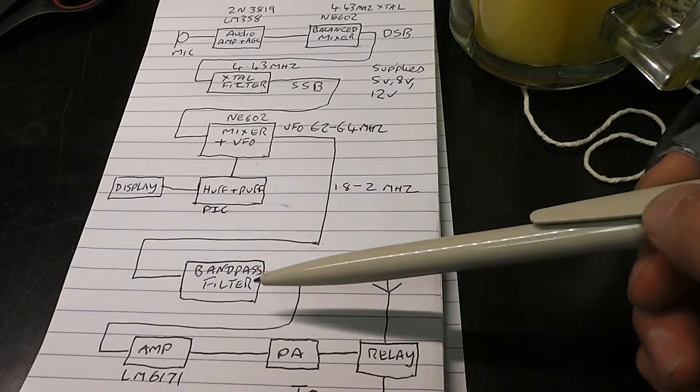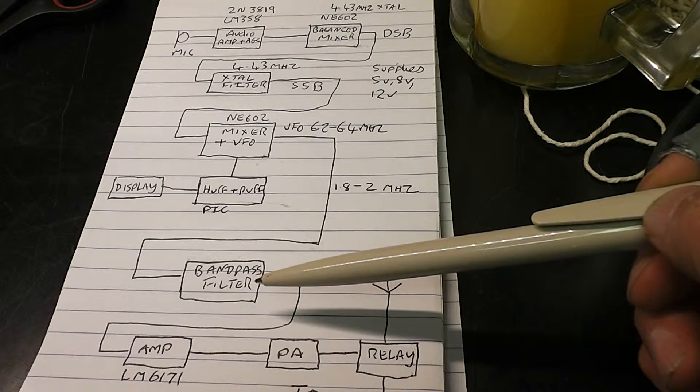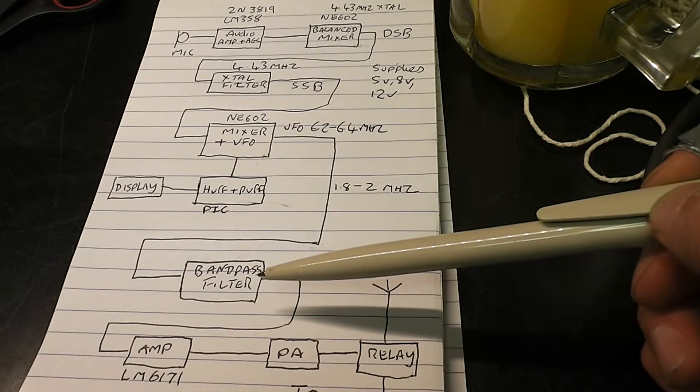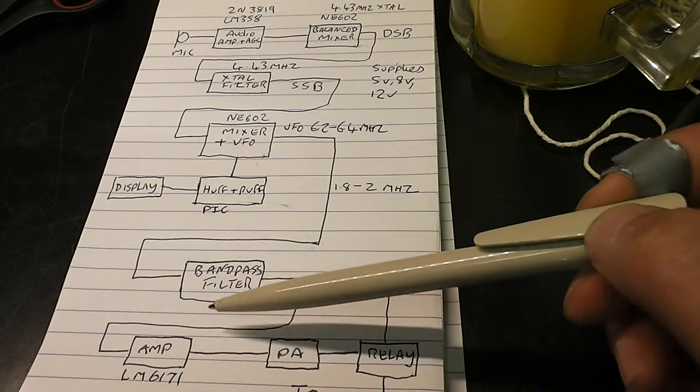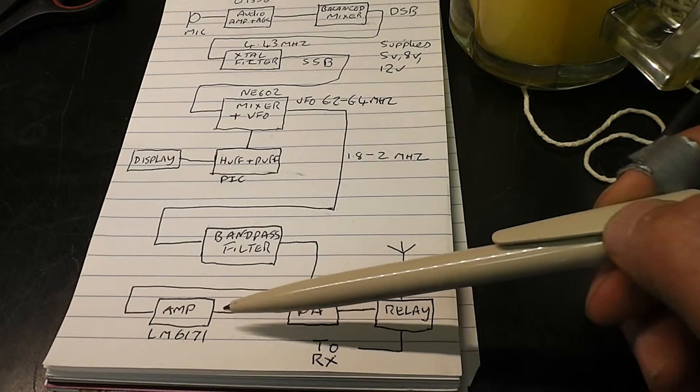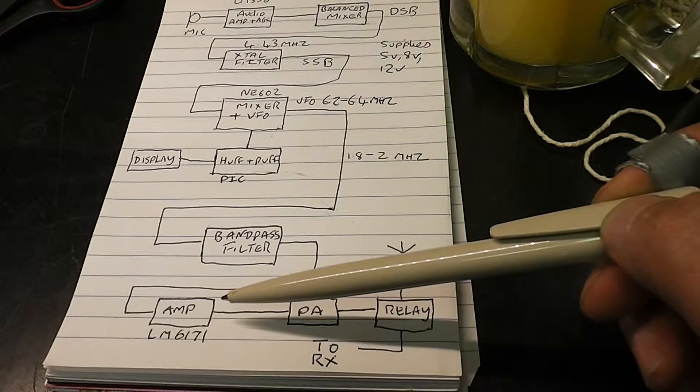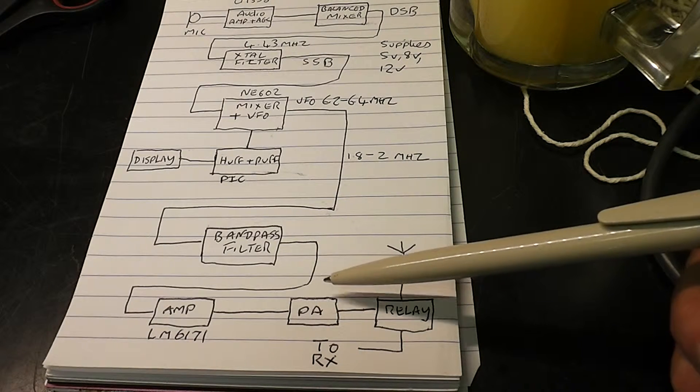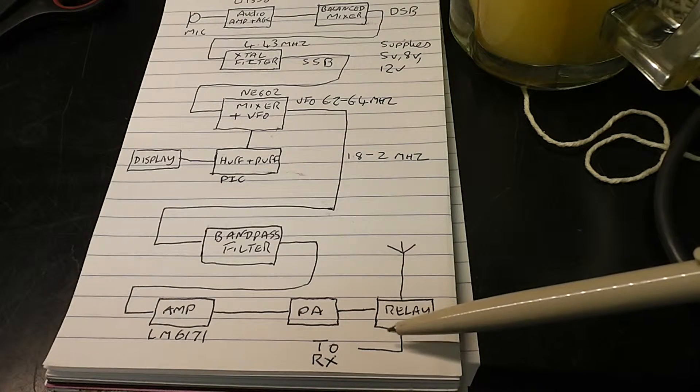The signal from the mixer then goes through a bandpass filter to make sure you've only got the difference signal and not the sum signal. Then it goes to an amplifier which was an op-amp I used for video signal, a PA amplifier, and then a relay to switch between the receiver and the aerial.